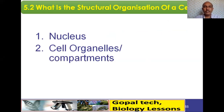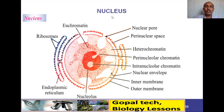Now, the structural organization of the cell — nucleus and cell organelles. The nucleus has a double membrane: an inner and outer membrane. It has nuclear pores. Between the two membranes is the perinuclear space. Inside there is chromatin, which may be euchromatin or heterochromatin, and there is a small body called the nucleolus.